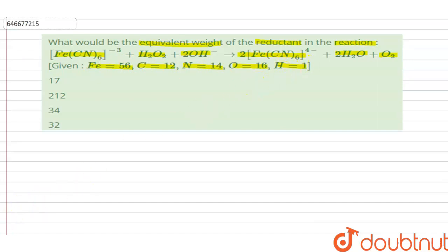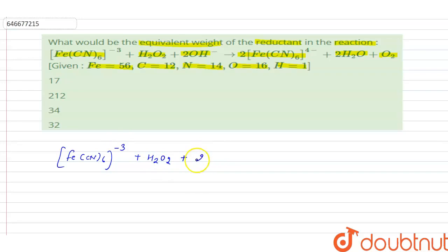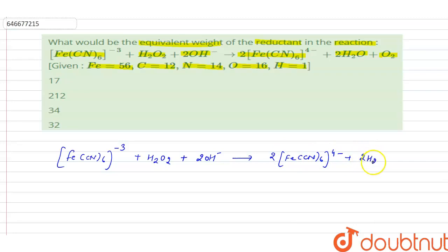First, we write the proper reaction: [Fe(CN)₆]³⁻ + H₂O₂ + 2OH⁻ gives 2[Fe(CN)₆]⁴⁻ + 2H₂O + O₂. We need to determine the equivalent weight of the reductant.